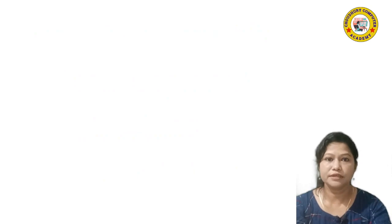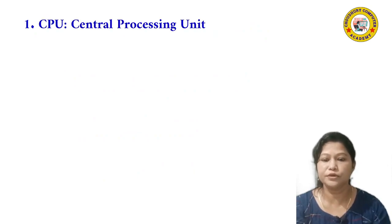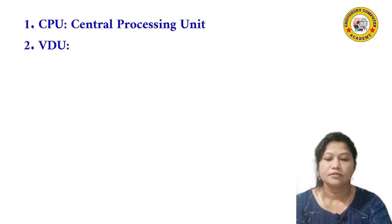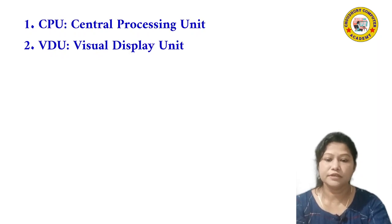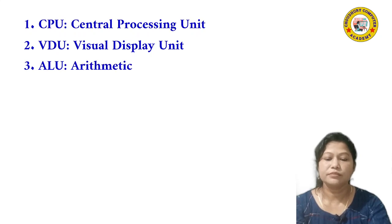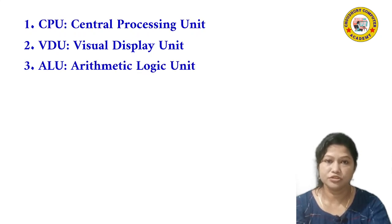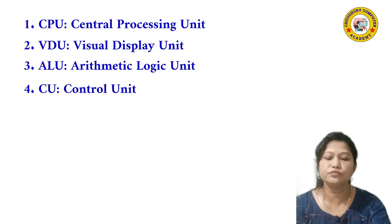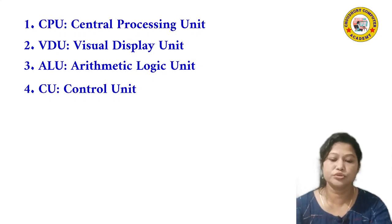Number 1: CPU — full form is Central Processing Unit. Number 2: VDU — full form is Visual Display Unit. Number 3: ALU — full form is Arithmetic Logic Unit. Number 4: CU — full form is Control Unit.